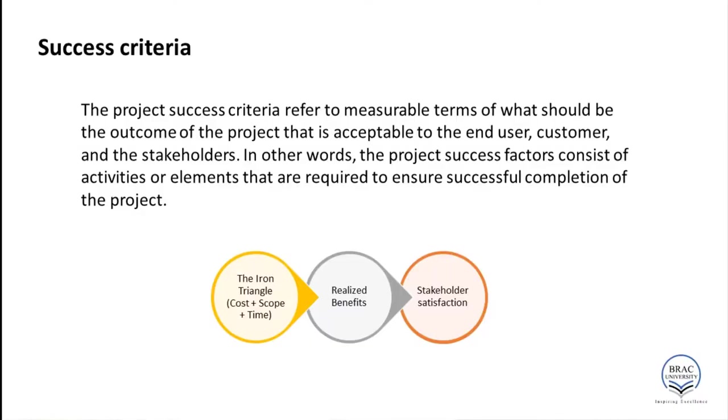To measure your success criteria, there are three rules of thumb to keep in mind. The first is the iron triangle. As discussed in week one, the iron triangle includes your cost, scope, and time, which should all ensure the quality of your project. When thinking about your success criteria, consider whether you have accounted for the iron triangle.